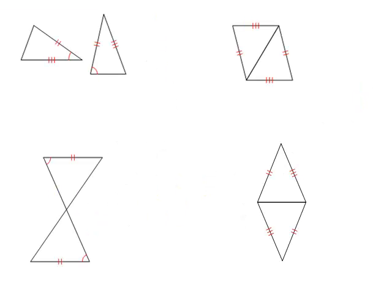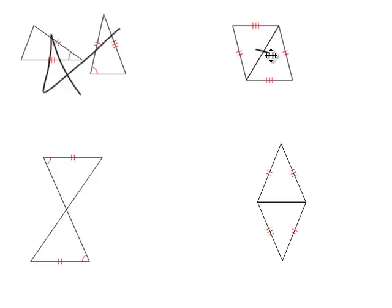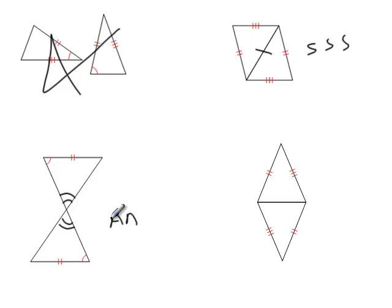Let's quickly review the previous sections and this section by figuring out what rule of congruence lets us say triangles are congruent. We have Side-Side-Side here — a shared side, marks 2-2, 3-3, shared, 1 — those two triangles are congruent by Side-Side-Side. We have vertical angles here: Angle-Angle-Side, Angle-Angle-Side — yes, those are congruent by Angle-Angle-Side.